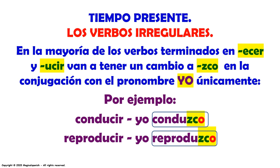Tiempo presente, los verbos irregulares. En la mayoría de los verbos terminados en UCIR y UCIR van a tener un cambio a ZCO en la conjugación con el pronombre yo únicamente. Por ejemplo: conducir — yo conduzco; reproducir — yo reproduzco.